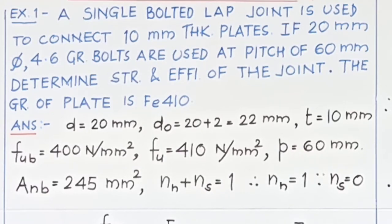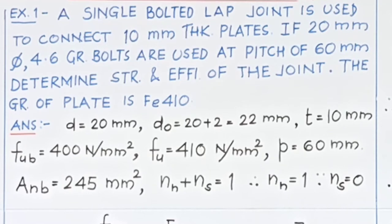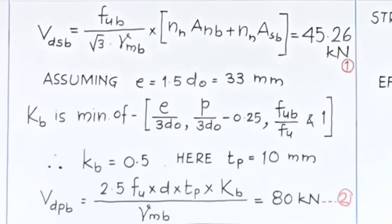It is clearly given that this is a single bolted lap joint. In a lap joint, the bolts are subjected to single shear. Therefore, NN + NS = 1. NN is the number of shear planes which intercept the thread, and NS is the number of shear planes which do not intercept the threads. When nothing is given, it is assumed that shear planes are intercepting the threads. Therefore, NN = 1 and NS = 0.